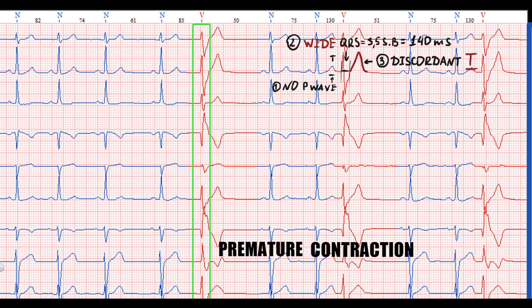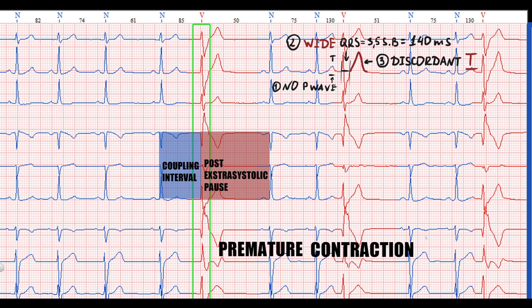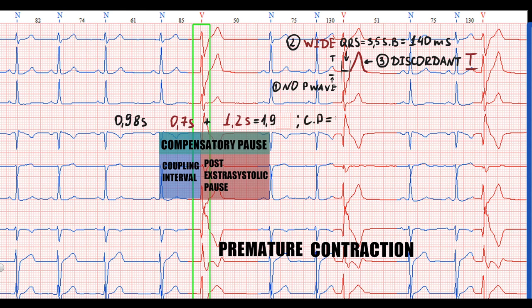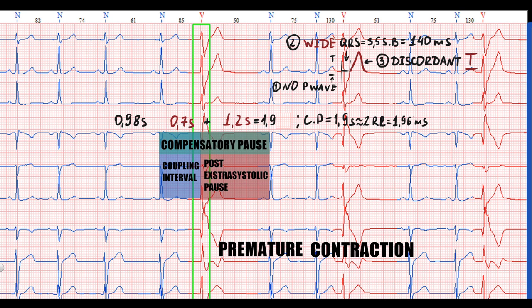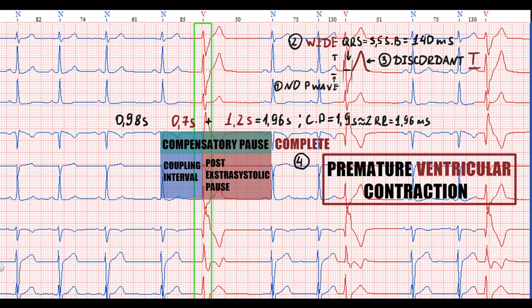According to premature contraction terminology, the interval from the onset of the previous sinus R-wave to the onset of the extrasystole R-wave is called the coupling interval. The interval from the extrasystolic R-wave to the next sinus R-wave is called the post-extrasystolic pause. Together they form the compensatory pause, which in PVC usually equals 2 previous sinus RR intervals — a complete compensatory pause. In our case, the compensatory pause equals 1.9 seconds, so it is complete. All of this indicates ventricular origin.